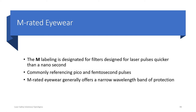M-rated labeling is designated for filters supposed to stop ultra-fast laser pulses. They are available and can be effective, though they usually offer a narrower range of coverage than non-M-rated eyewear.